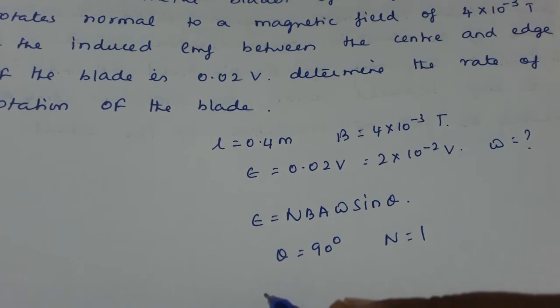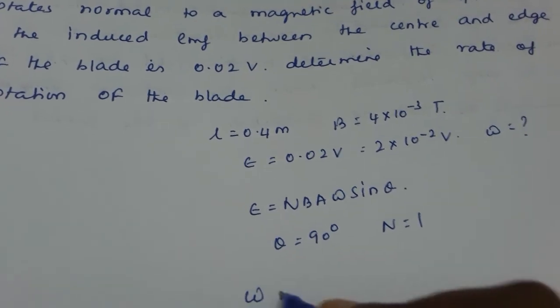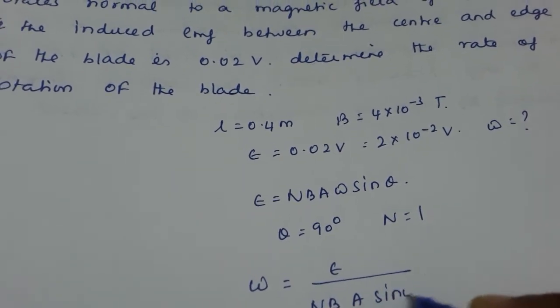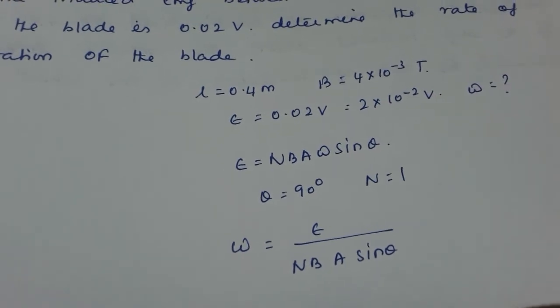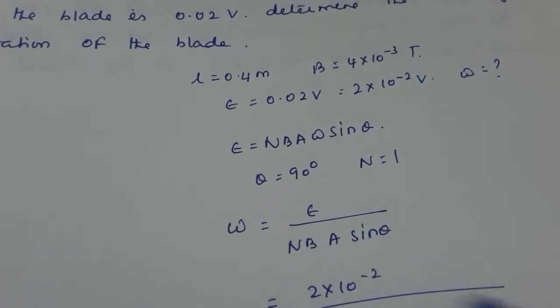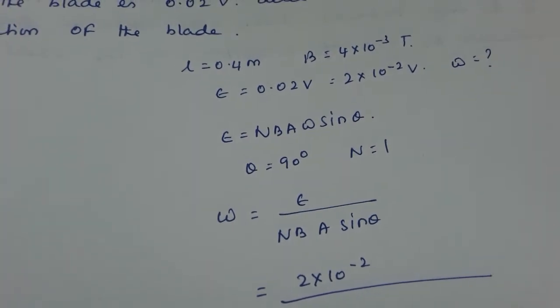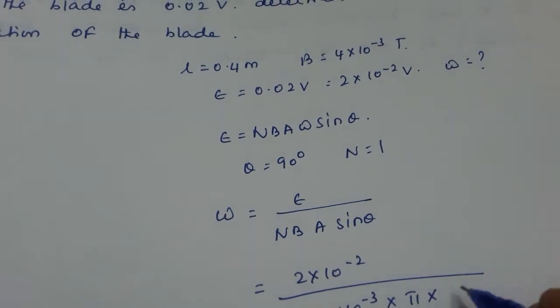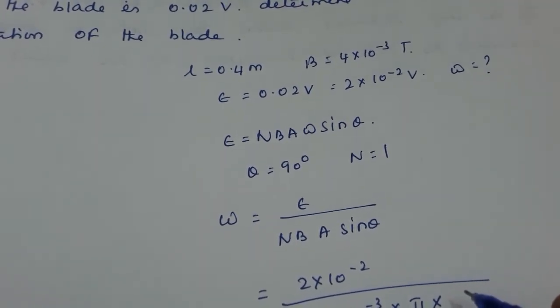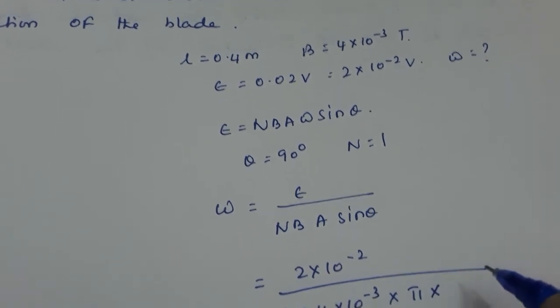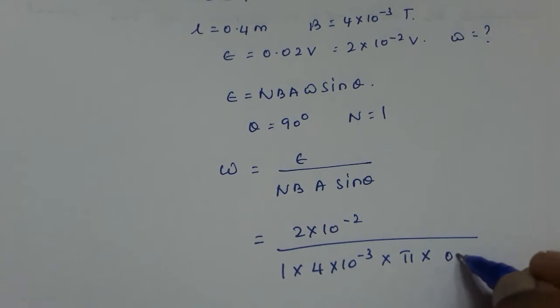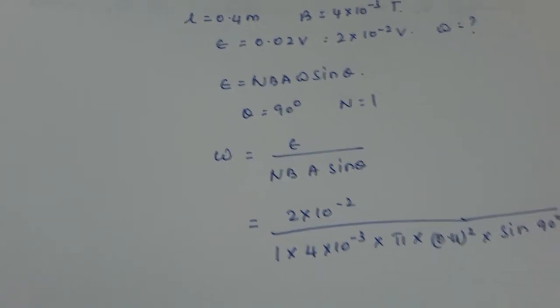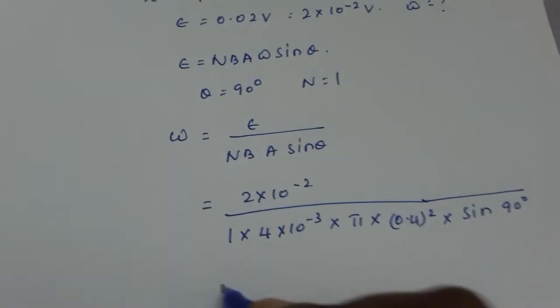Now we will derive the formula and find omega. Omega is equal to epsilon by NbA sin theta. This can be written as epsilon is 2 into 10 raised to minus 2 divided by N is 1 into 4 into 10 raised to minus 3 into pi r square. Your length is your radius, so it is pi into 0.4 the whole square into sin 90 degrees. Sin 90 degrees is 1.